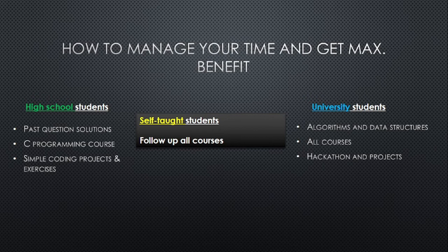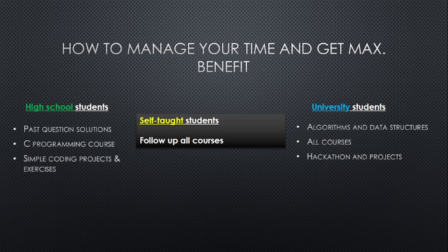For university students, they should take algorithms and data structures no matter which domain they are in, because it will be of help in some way. They should also take all courses relevant to them — this doesn't necessarily mean they should take everything, just that there's no single course they are forced to take. Obviously they might need to take the C programming course because of their university curriculum, but I would also say they should learn Python, as Python is very versatile. They should also look forward to the hackathons and projects posted here, which will help them master certain concepts.